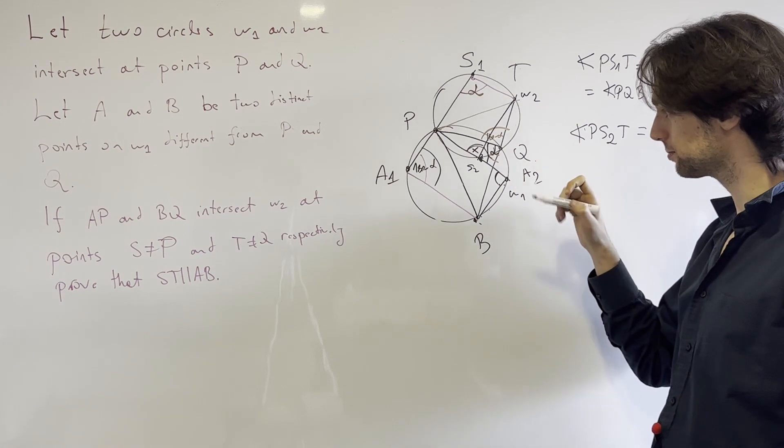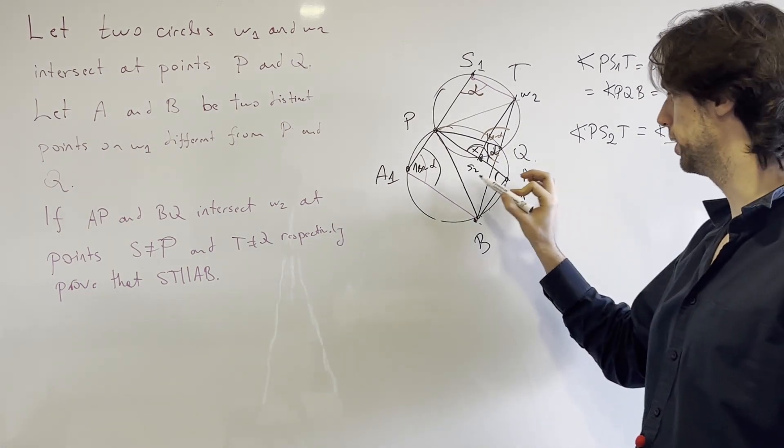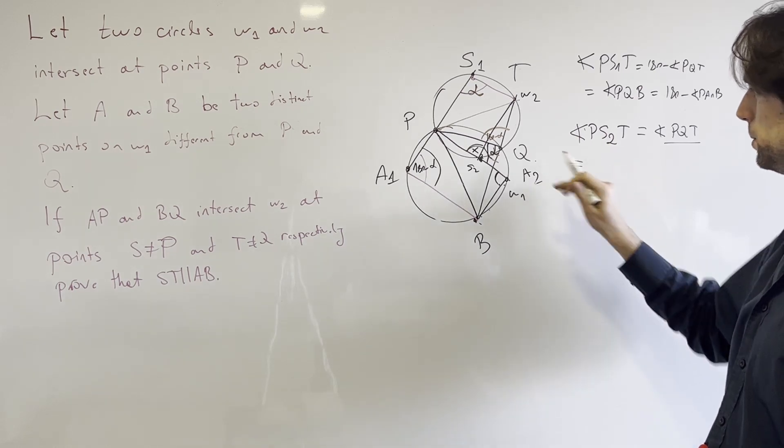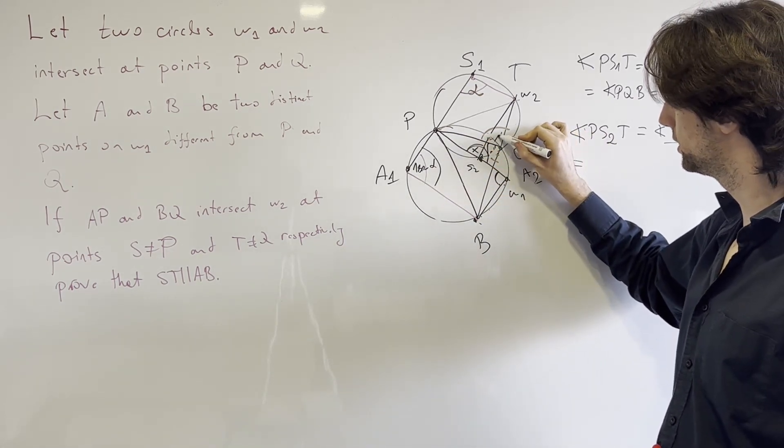Or in other words, this one plus this one needs to be 180. So what do we have? We have that the angle, call it PQT, is equal to x. And angle PQT, let me delete this, and this is equal to x.